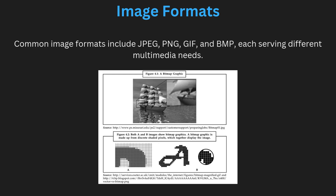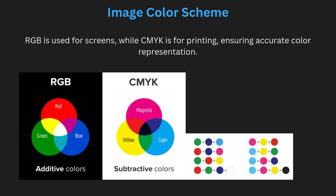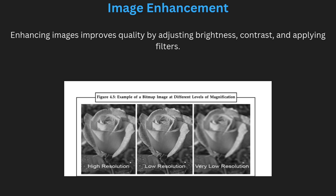Now, image color schemes. An image color scheme refers to how colors are represented and used in an image. The two main color models in multimedia are RGB and CMYK. RGB means red, green, and blue — it is used for digital displays like monitors and TVs, combining these three colors in different amounts to produce a wide range of colors. CMYK means cyan, magenta, yellow, and black — it is used for printing, as it better represents how colors are mixed with ink. Understanding these color models helps ensure accurate color representation in multimedia projects.